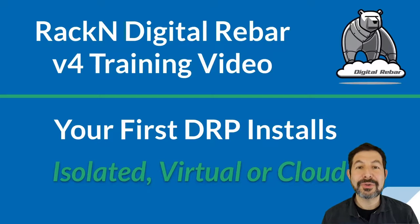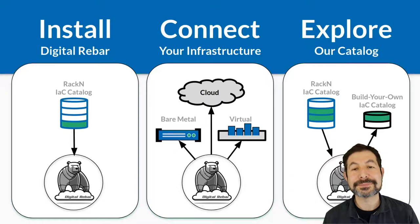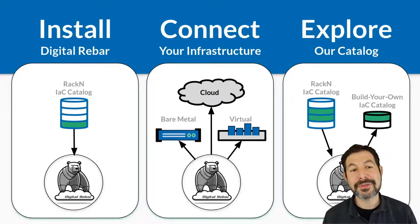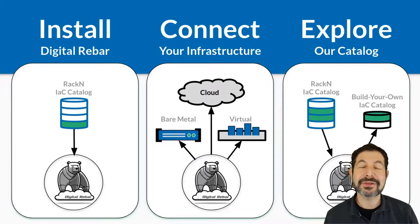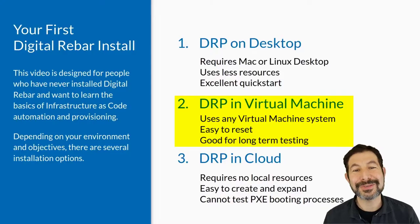Make sure you're watching the right video for your environment. If you're not sure which one, we're going to talk about which one is which. No matter which install process you're using, it's all pretty much the same thing. You download Digital Rebar from the infrastructure as code catalog, you connect it to the infrastructure you want, and then you'll explore our full catalog and do more advanced things. Those obviously are outside the scope of this video.